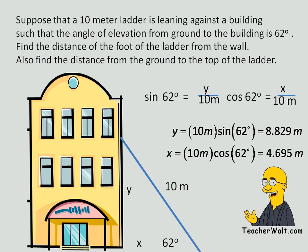And that's what they ask us to find. So we find the building from the ground to the top of the ladder is 8.829 meters, and from the building to the foot of the ladder is 4.695 meters.